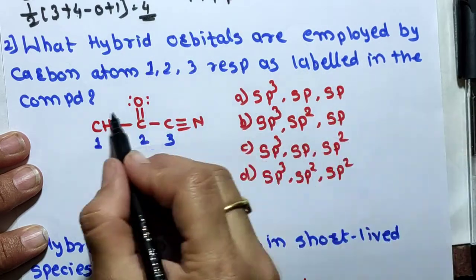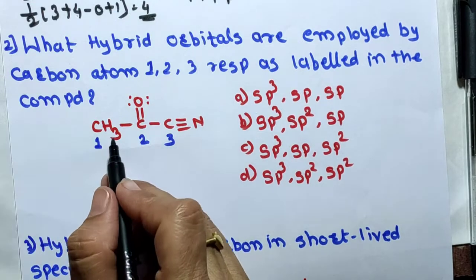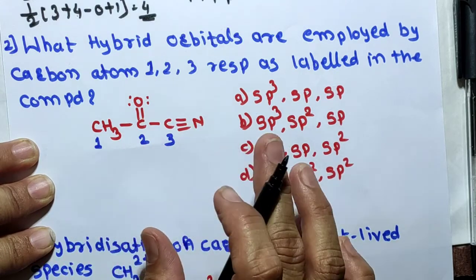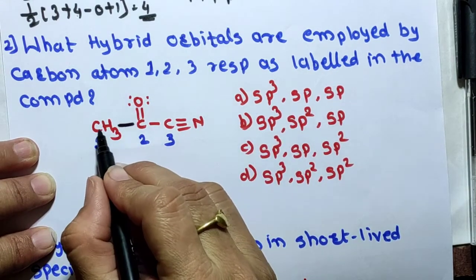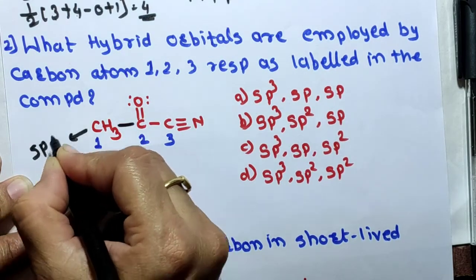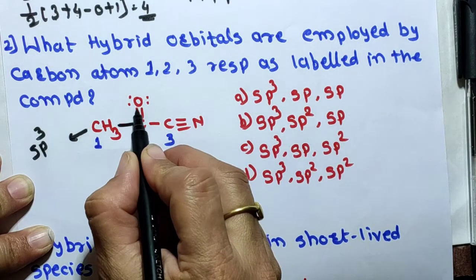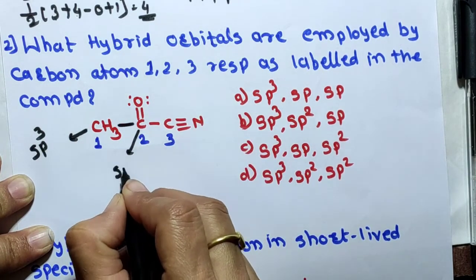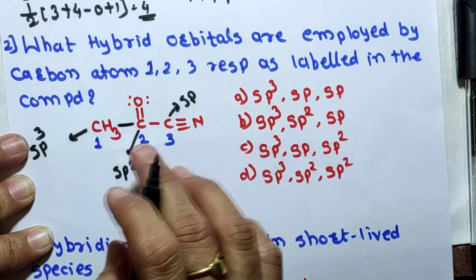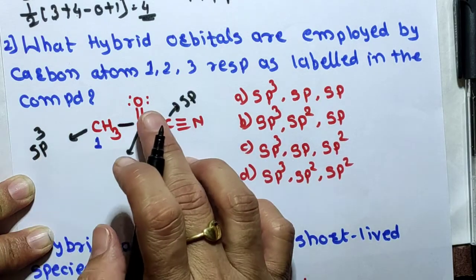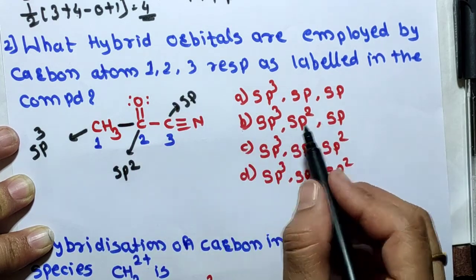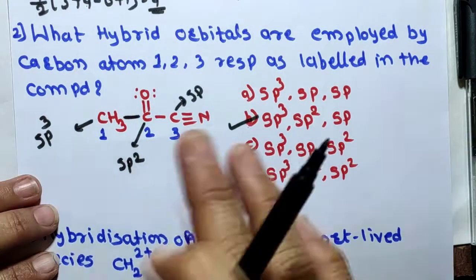Next MCQ: what hybrid orbitals are employed by carbon atoms one, two, and three respectively as labeled in the compound? There are three carbon atoms labeled one, two, three. A simple trick to remember: if carbon is bonded by a single bond, hybridization is sp³; double bond gives sp²; triple bond gives sp. So for single bond sp³, double bond sp², triple bond sp — option two is our right answer.